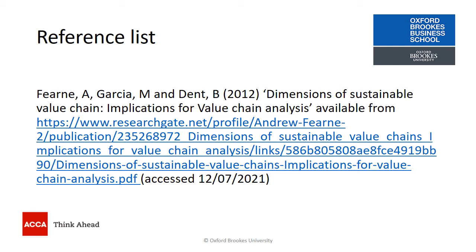If I wanted to include that within my reference list, I could include the authors. Remember, in the reference list I give the author's surname and initial, the date of publication, and then I put the title of the article in quotation marks. Then I would put 'available from' and give the URL where I found the article. And I always, when I have an internet source, give the date at which I either downloaded or accessed that article. So I read the article online, so I've put 'accessed' rather than 'downloaded.'